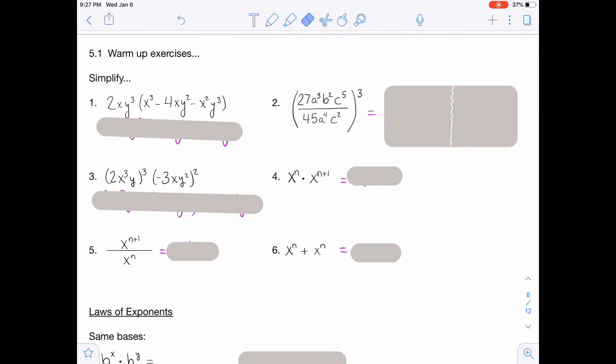Okay, so let's see how you did. For this first one, you're just distributing the 2xy to the third to each of the terms and following the appropriate rules. So you're going to end up with 2 and then x to the fourth, y to the third for the first term. And then you're going to have a minus 8x squared, y to the fifth for the second term. And the third term, you will have a minus 2x to the third, y to the sixth.